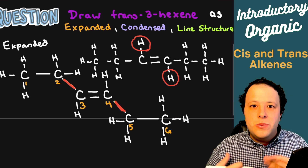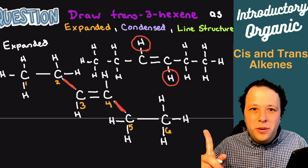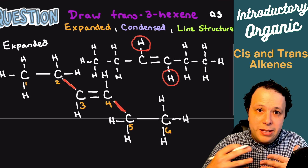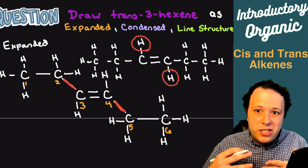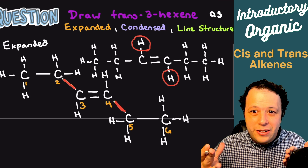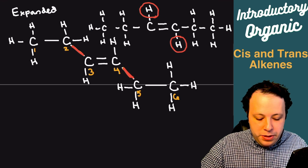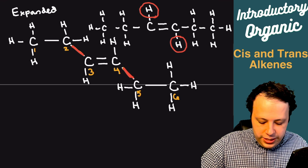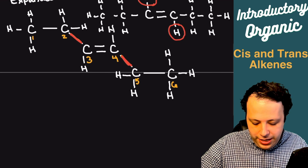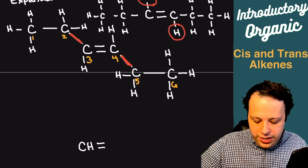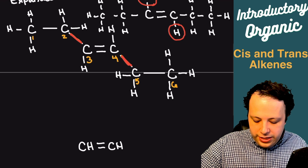Now with condensed, the whole idea here is we're trying to simplify our structure. I do the same thing — I start at my double bond and write my CH groups in there.